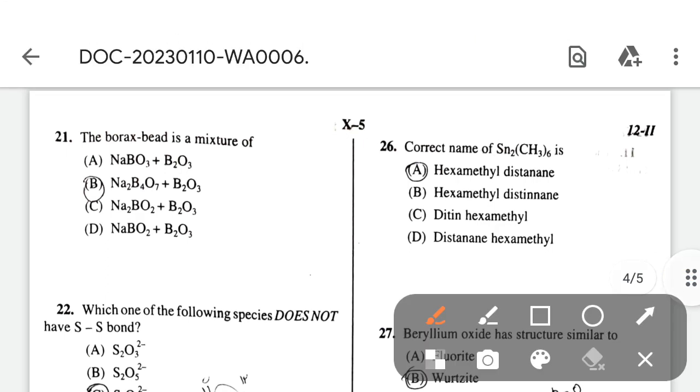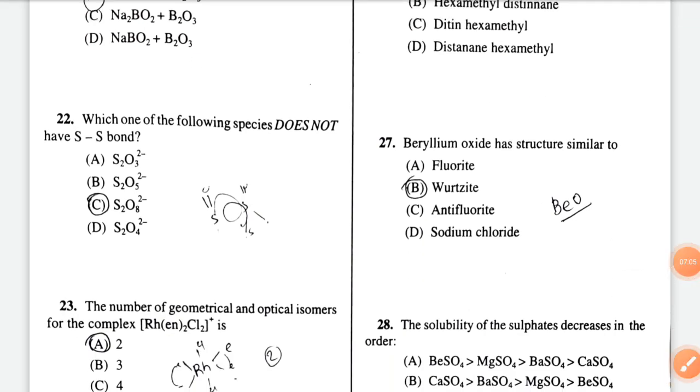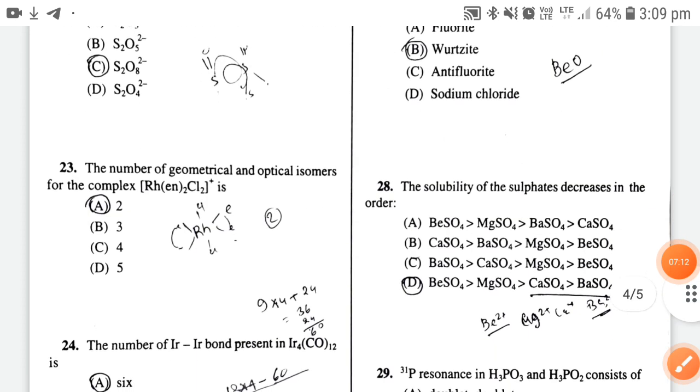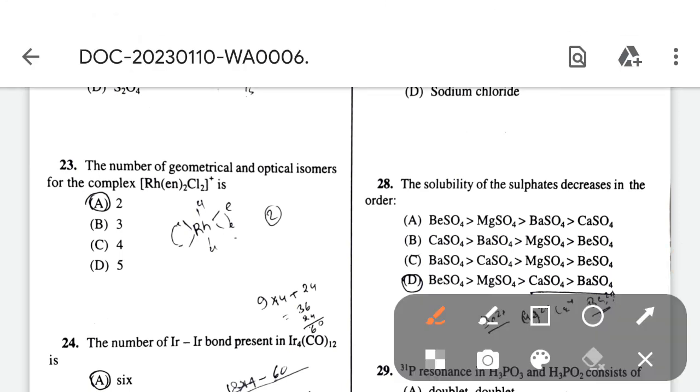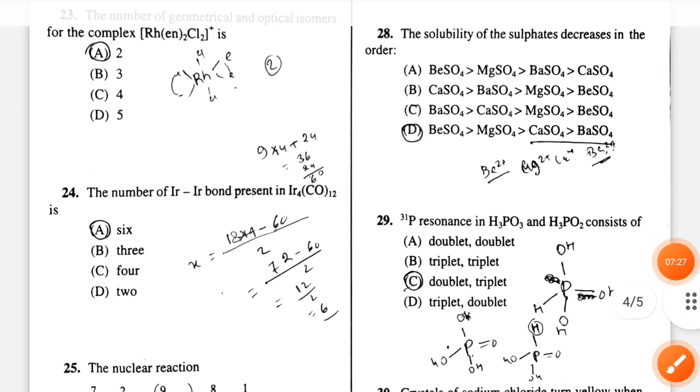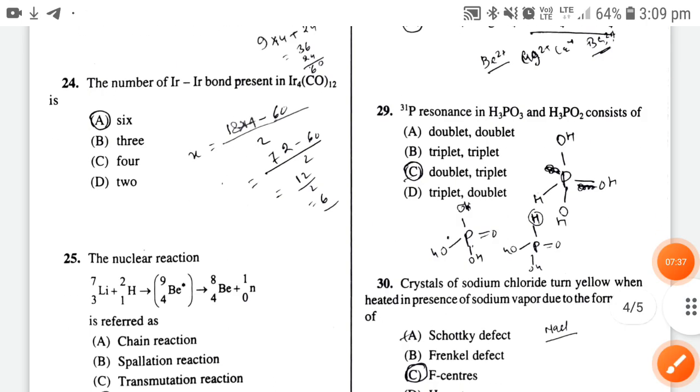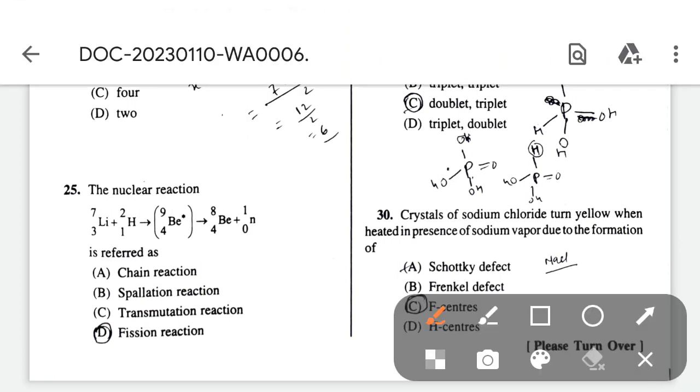Which of the following species does not have S-S bond? The correct option is option C. The number of geometrical and optical isomers for the complex: two geometrical isomers are possible but one sigma plane is there, so no optical isomer - option A. The number of Ir-Ir bonds present in [Ir(CO)₆][IrCl₆] is option A. The nuclear reaction shown is referred to as - option D.